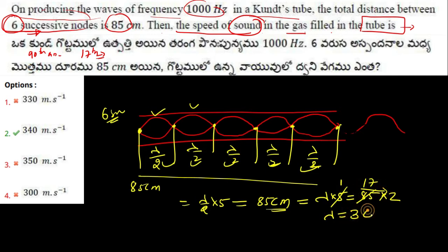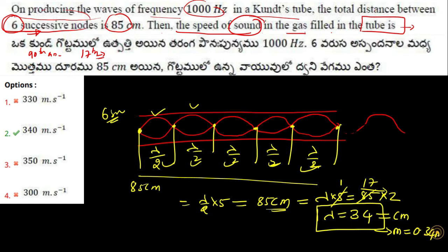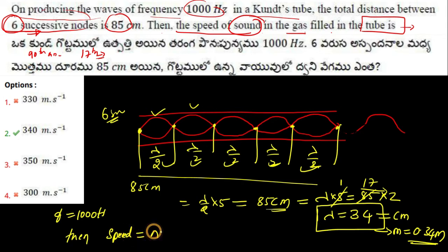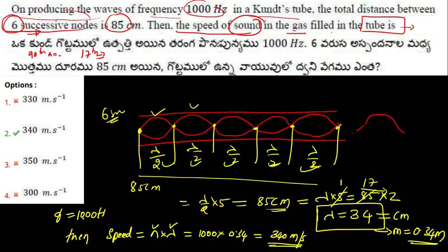Cancelling out: 85 divided by 5 gives 17, so lambda equals 17 times 2, which equals 34 centimeters, or 0.34 meters. The frequency is given as 1000 Hz. Therefore, speed equals frequency times lambda, which is 1000 times 0.34, equals 340 meters per second. So option two is the correct answer.